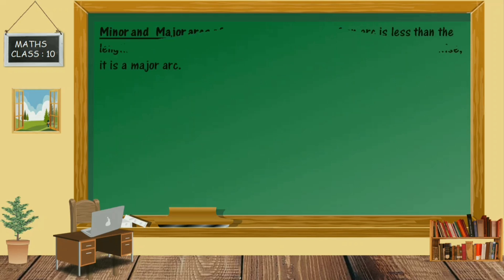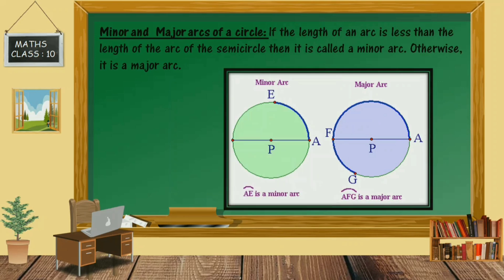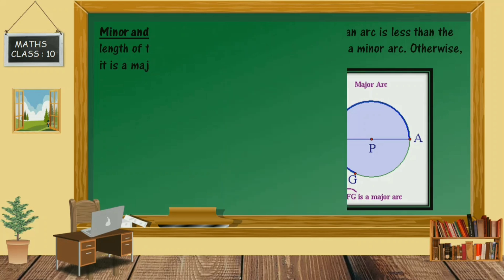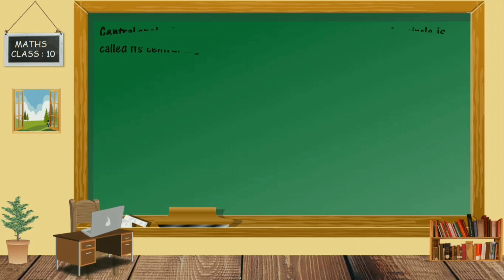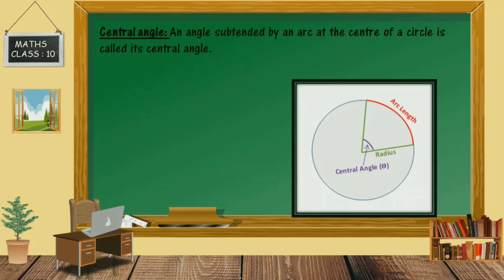Next are minor and major arcs of a circle. If the length of an arc is less than the length of a semicircular arc, it is called a minor arc; otherwise it is a major arc. In the given figure, arc AE is a minor arc and arc AFG is a major arc. Next is the central angle: an angle subtended by an arc at the center of the circle is called the central angle.